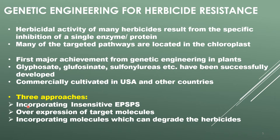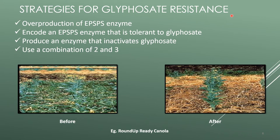Herbicidal activity of many herbicides results from the specific inhibition of a single enzyme or protein. Many of the targeted pathways are located in the chloroplast. There are three approaches: incorporating insensitive EPSPS, over-expression of the target molecule, and incorporating molecules which can degrade the herbicide. Strategies for glyphosate resistance include over-production of EPSPS enzyme, encoding an EPSPS enzyme tolerant to glyphosate, and producing an enzyme that inactivates glyphosate.